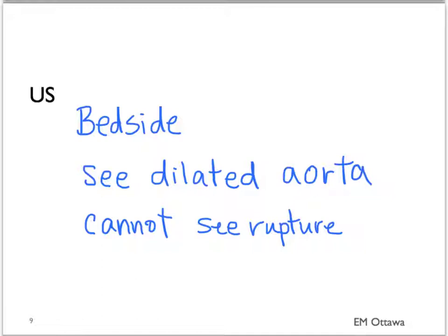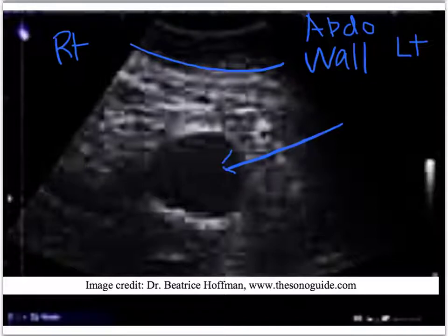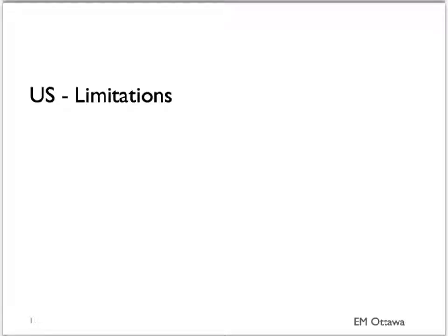On an ultrasound, an AAA will look like this. This is an ultrasound still image — a transverse view of the aorta. This is the abdominal wall, with patient's right and left shown. This black circle represents a AAA; when measured, the diameter is about 6 cm. Bedside ultrasound is a quick and easy way to diagnose AAA and can be done in unstable patients. However, it is not a perfect test — it will not tell you whether or where it has ruptured, and in patients with increased BMI or overlying bowel gas, it is sometimes impossible to visualize the aorta.